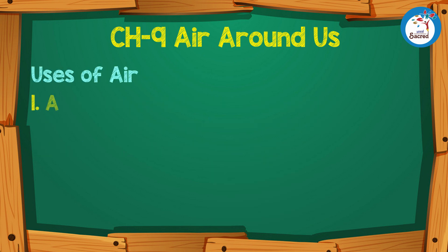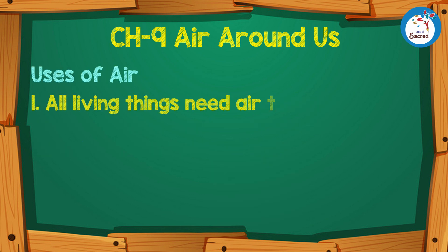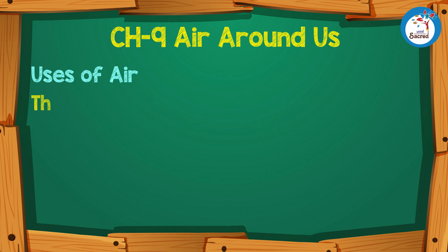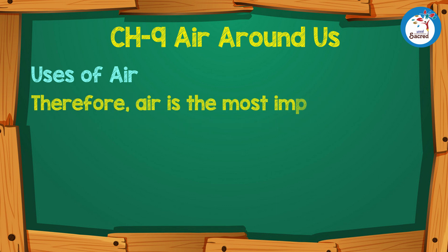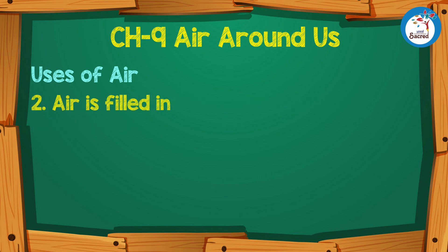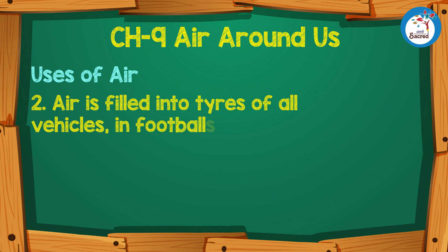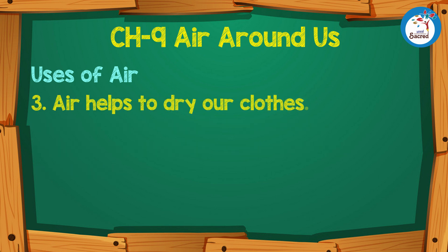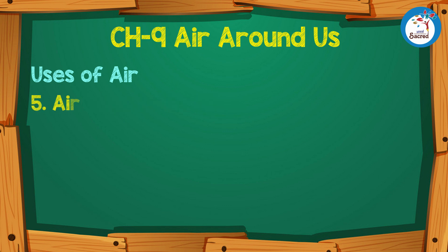Uses of Air: First, all living things need air to breathe. Without air, we cannot survive. Therefore, air is the most important thing for us. Second, air is filled into tyres of all vehicles, footballs, volleyballs, balloons and rubber tubes used for swimming. Third, air helps to dry our clothes. Fourth, air helps to fly kites. Fifth, air helps to run windmills.